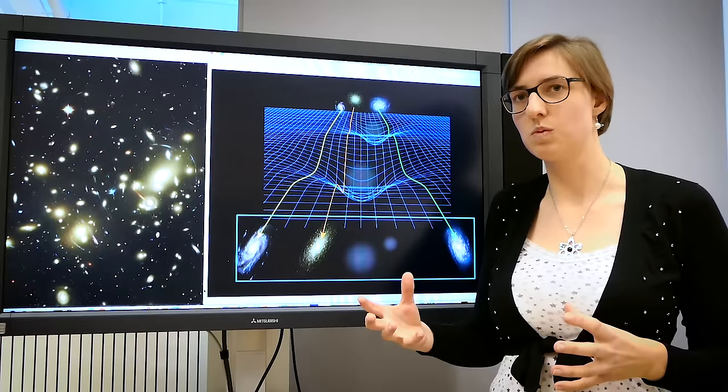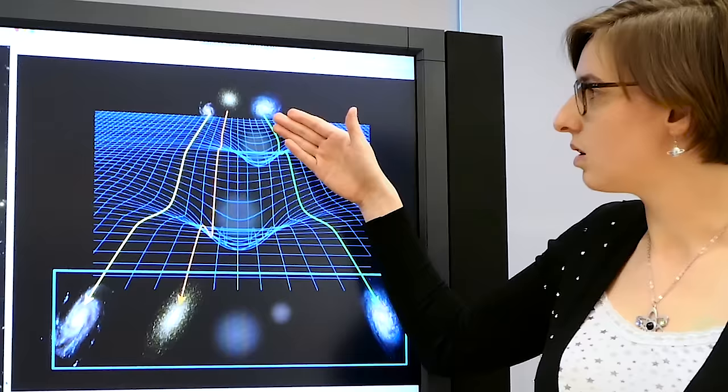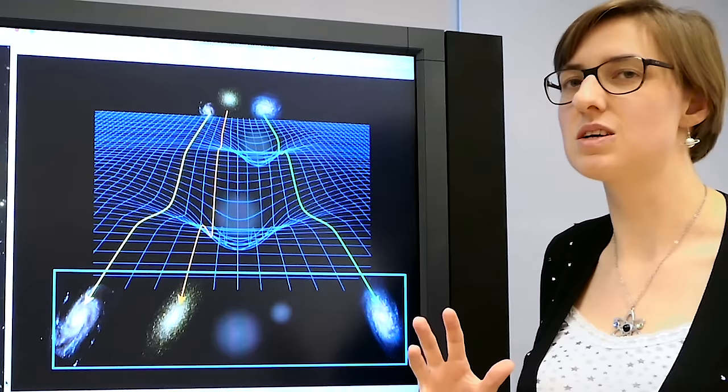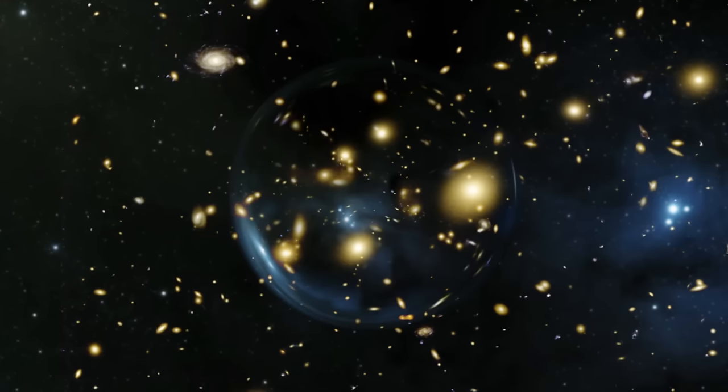Weak gravitational lensing works because, as Einstein taught us, gravity is nothing more than the curvature of space-time. And as the light of distant galaxies travels through this curved space-time, we see their images through our telescopes bent.